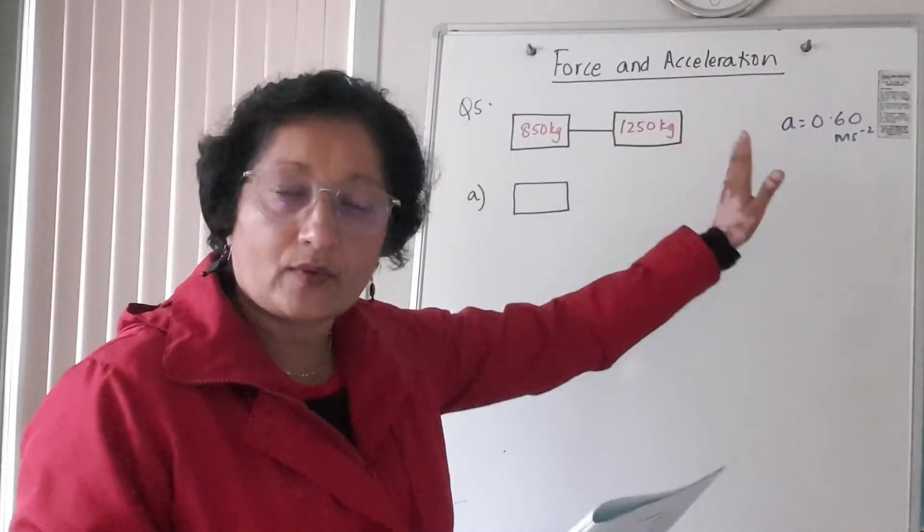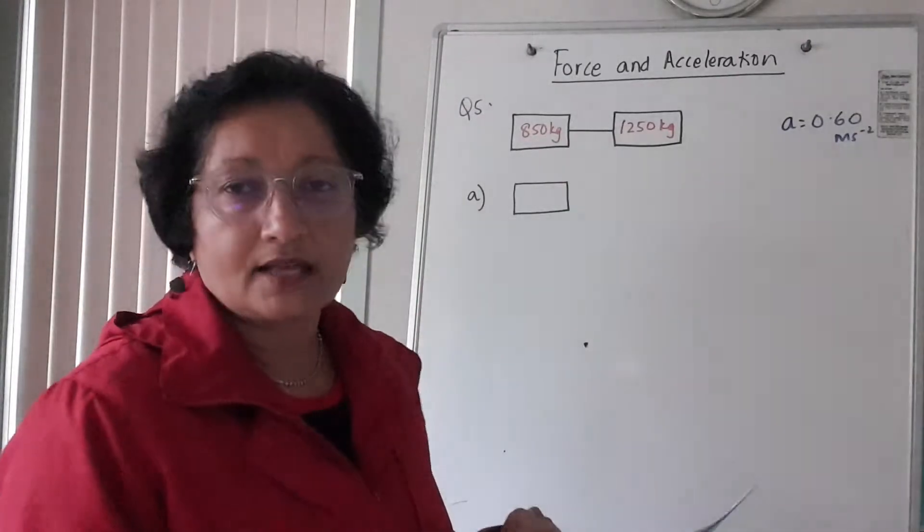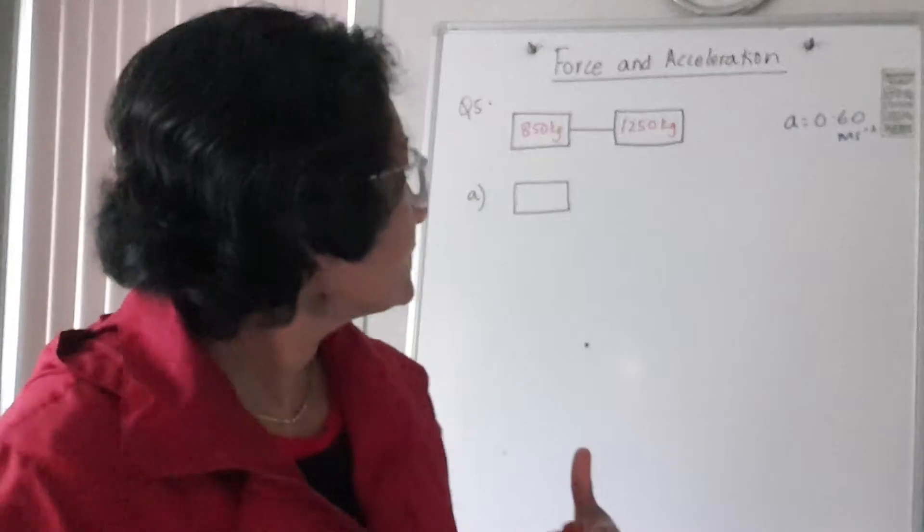So what does that mean? It means that two cars, this car is pulling the other one. That's the meaning of the word towing. And I put the masses of the cars there and that's the rope, the tow rope. So one car is attached to the other.